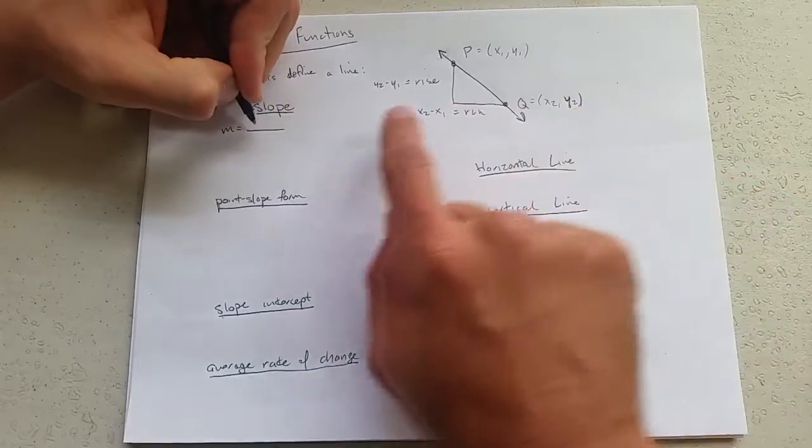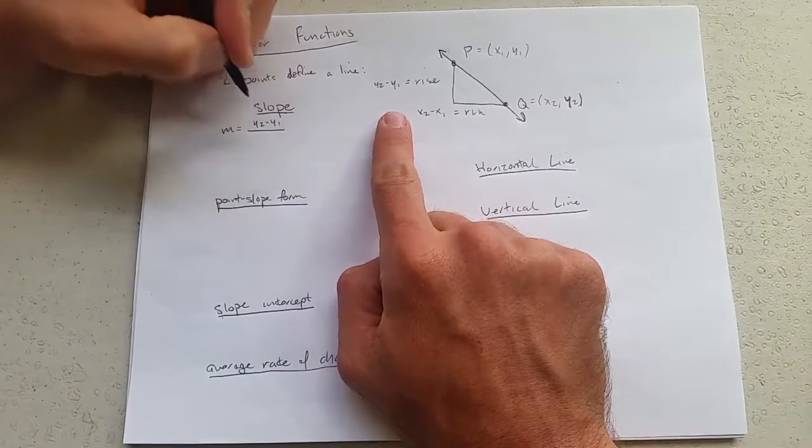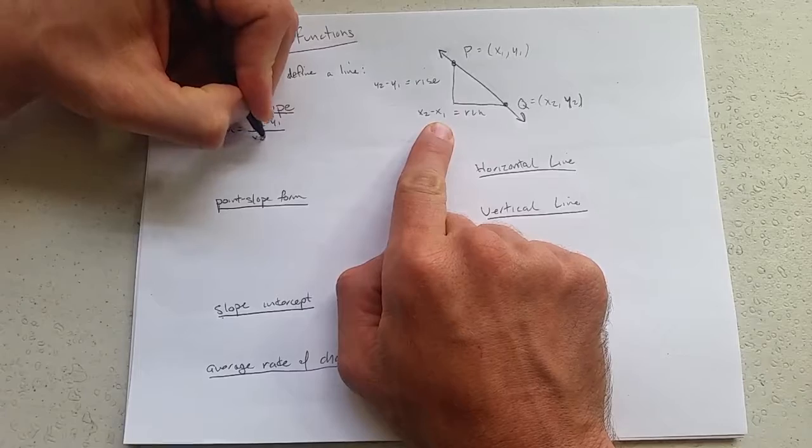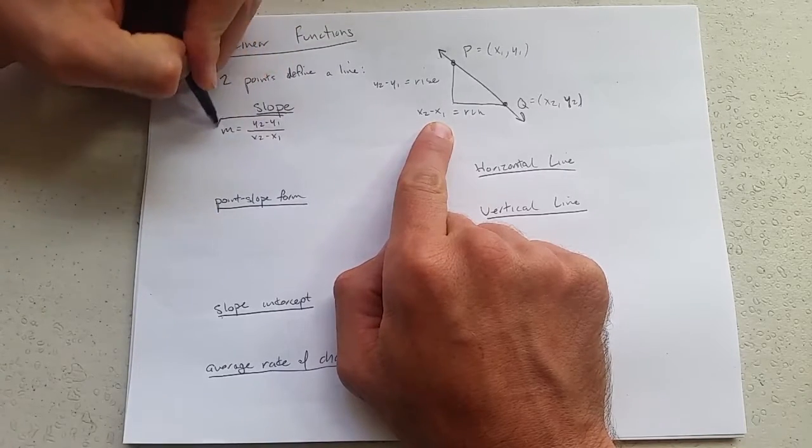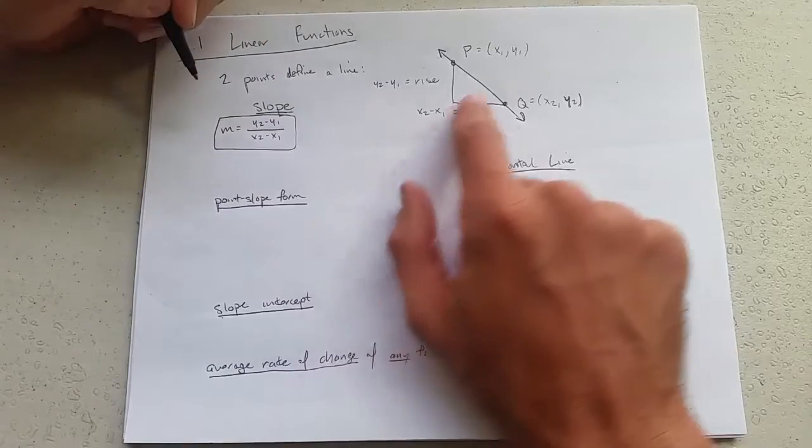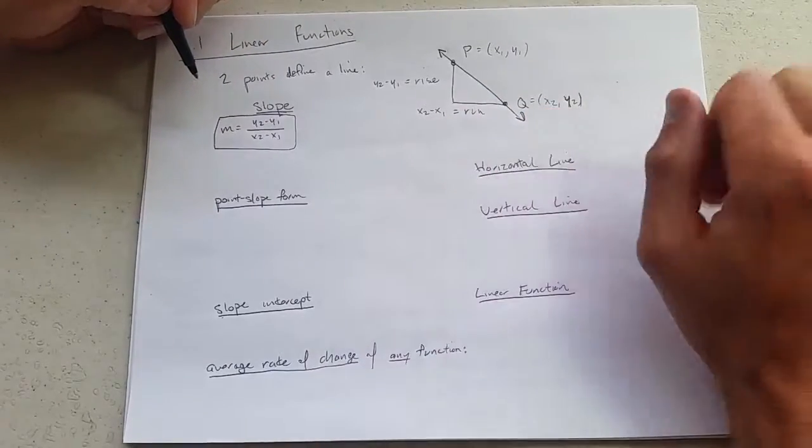So I'm going to write the y2 minus y1 divided by x2 minus x1. So this right here is the slope of a line through these two points.